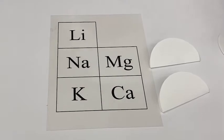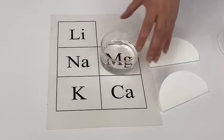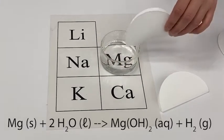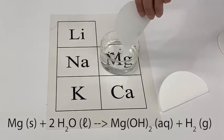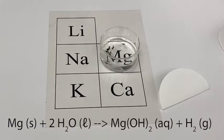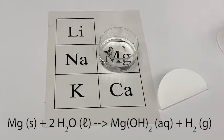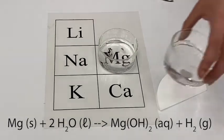Now let's take a look at the alkaline earth metals. We'll start with magnesium. You can see there's not much of a reaction, but let's take a look at calcium.